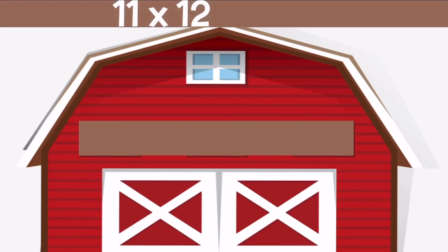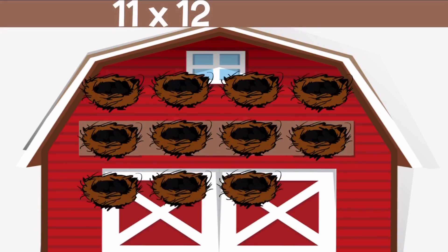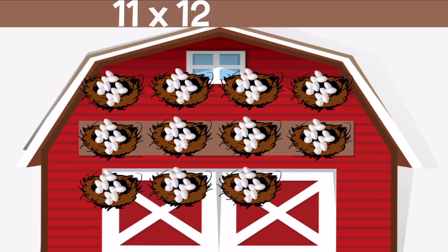11 times 12 means 11 nests with 12 eggs inside of each nest. Let's add them all up and we get 132 eggs.